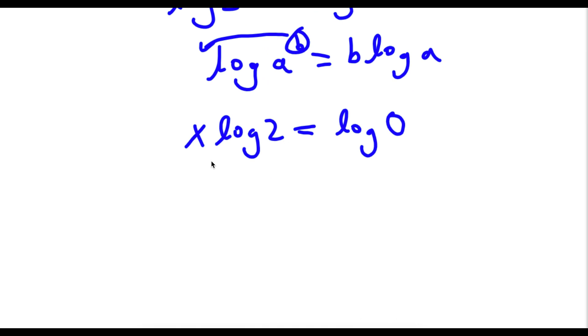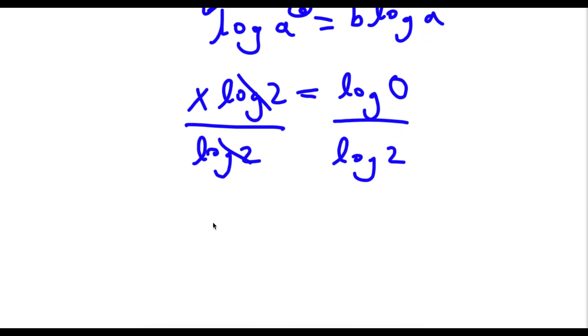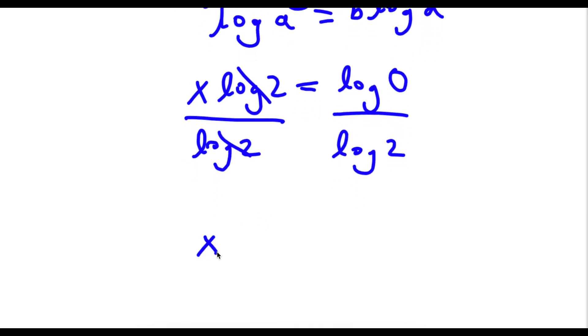Now I can go ahead and divide both sides by log 2 because I want to isolate x. So these two cancel out, and I'm left with x is equal to log 0 over log 2.